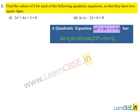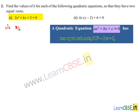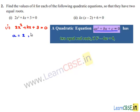Moving on to the second problem: find the values of k for each of the following quadratic equations so that they have two equal roots. The first equation given is 2x² + kx + 3 = 0. Comparing with ax² + bx + c = 0, we get a = 2, b = k, and c = 3.